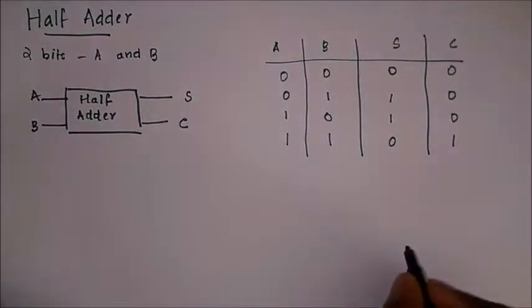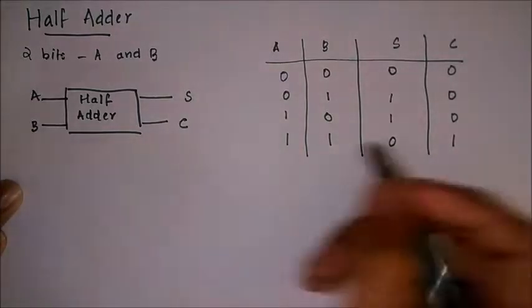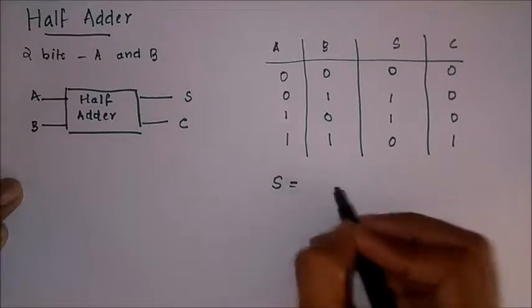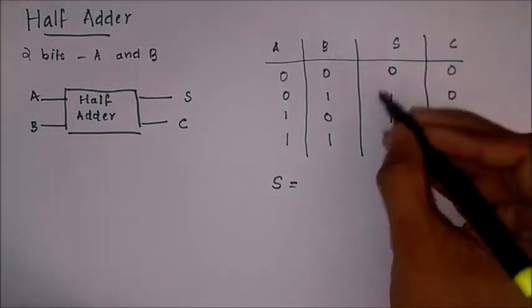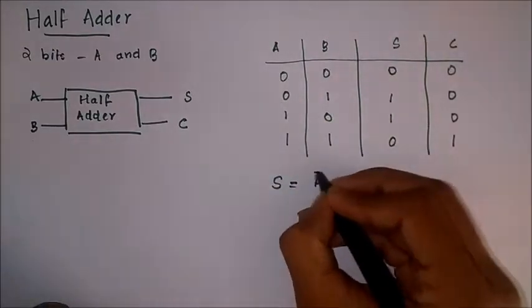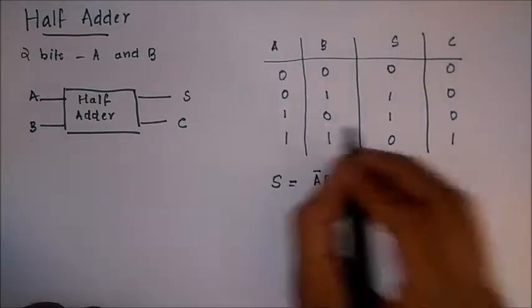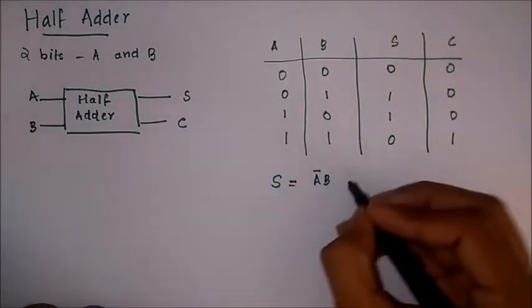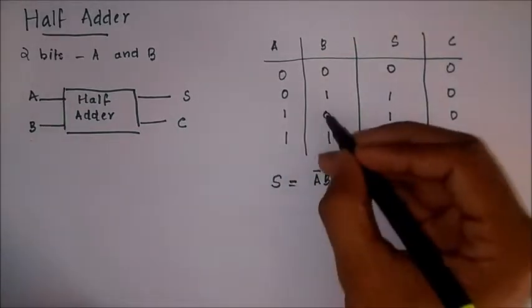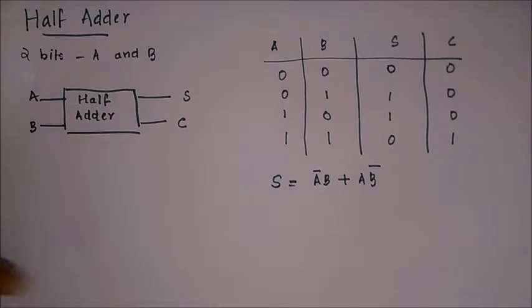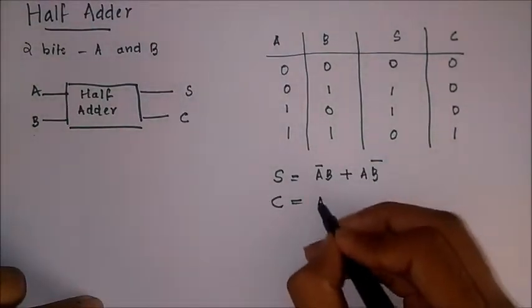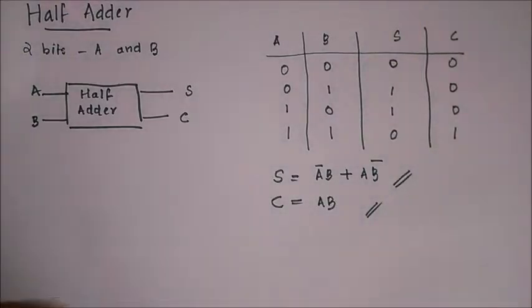Now from the truth table we can easily write the sum of products equations for sum and carry. That is sum S equals, here we'll take another 1 here and here: A bar B plus, and the next one corresponds to A B bar. We give a complement for the 0 terms, that is max terms. Similarly, we can write carry term as A B.